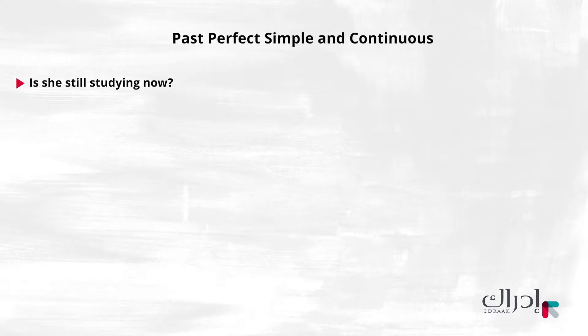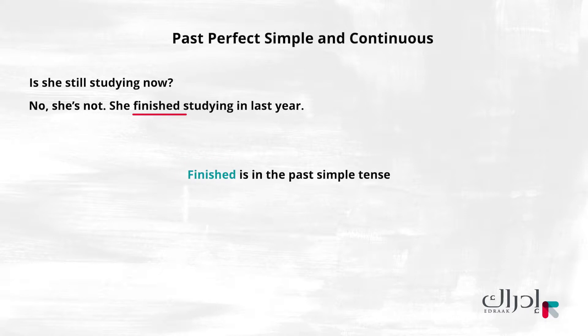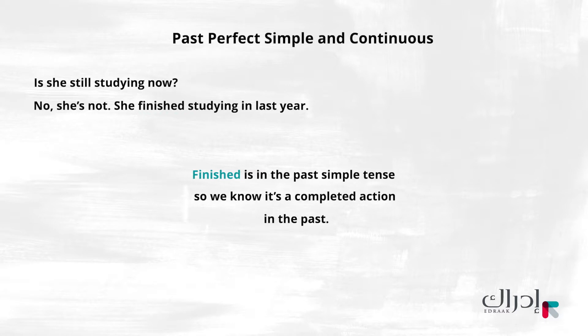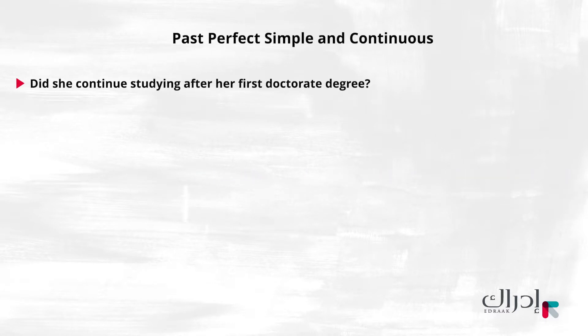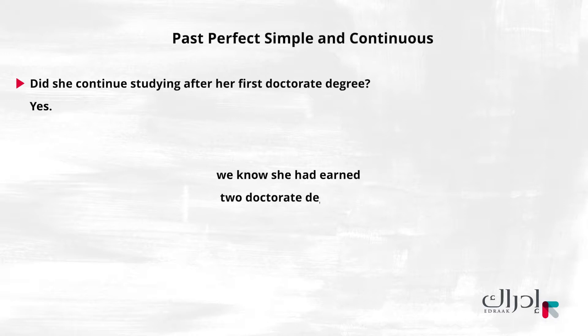Is she still studying now? No, she's not. 'Finished' is in the past simple tense, so we know it's a completed action in the past. Did she continue studying after her first doctorate degree? Yes, because we know she had earned two doctorate degrees.